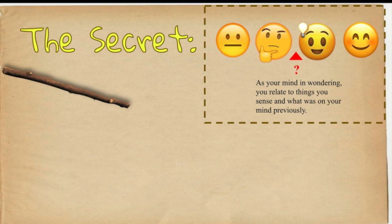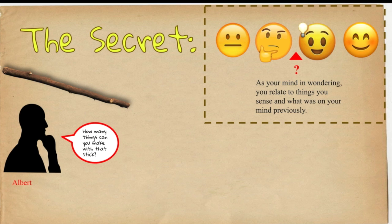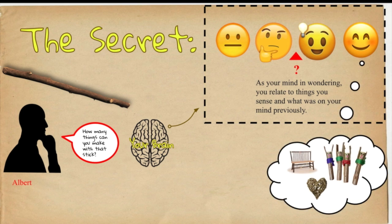So, as an example, take this stick. Albert says, how many things can you make with that stick? Your brain is going to go through this process. And as your mind is wandering, you relate to things you sense and what was on your mind previously. Like, maybe on my mind previously was sitting at the park on a bench, and all of a sudden I get an idea. One of those ideas is a bench made out of sticks. And of course I have a ton of others, too.